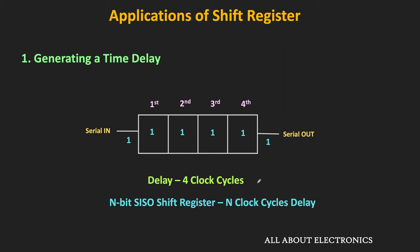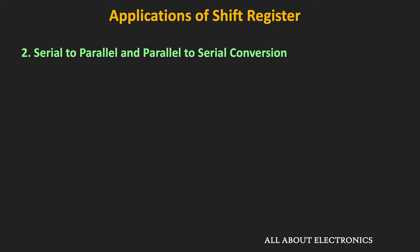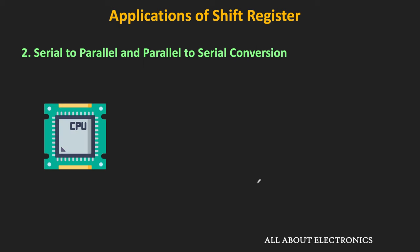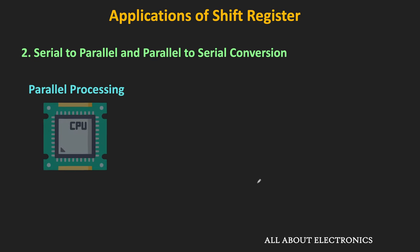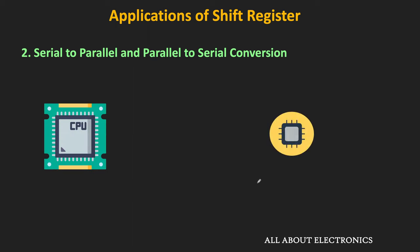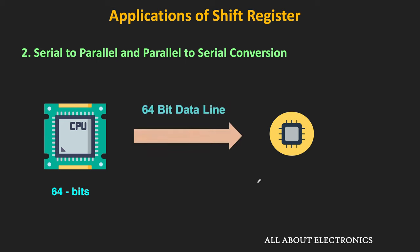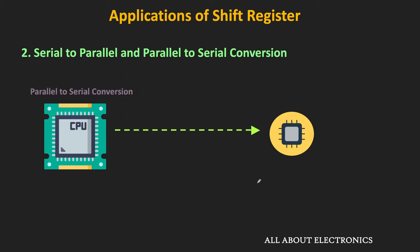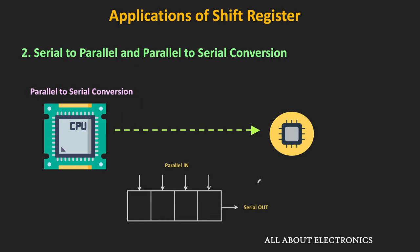The second application is Serial to Parallel and Parallel to Serial Conversion. In computers, for faster processing, the data is processed in parallel. But whenever this data needs to be sent to an outside device, it needs to be converted into serial form. For example, internally in the CPU, 64 bits of data are processed in parallel. But if we send the same data outside in parallel, then we require 64 data lines, and for long-distance communication, that is not feasible or cost-effective. So we need Parallel to Serial Conversion at the transmitter side. Using the Parallel In Serial Out type of shift register, the parallel data can be converted into serial form.